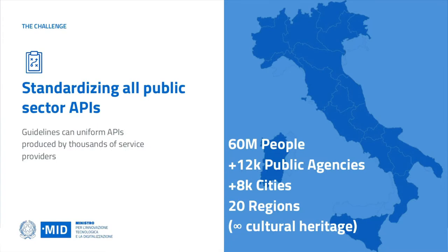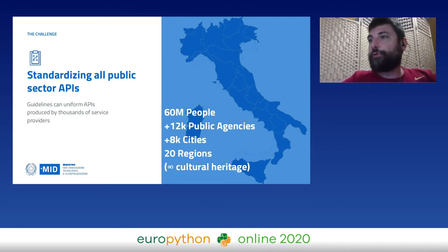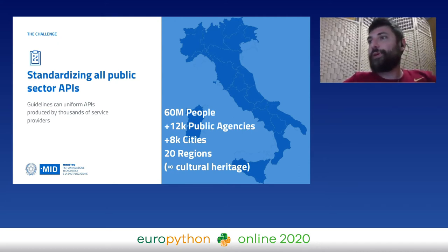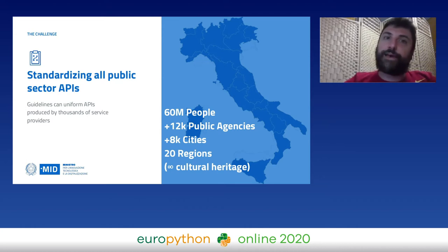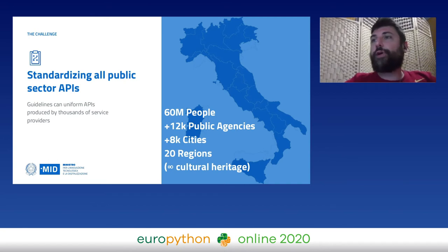One of the goals of the Italian digital strategy is to uniform the APIs produced by all Italian agencies. This is quite challenging because we have 60 million people, more than 20,000 public agencies, eight cities, and 20 regions with some autonomy. To create a uniform environment for software produced by all those entities was not easy. The solution we found is to provide guidelines so that every agency should produce APIs following those guidelines.